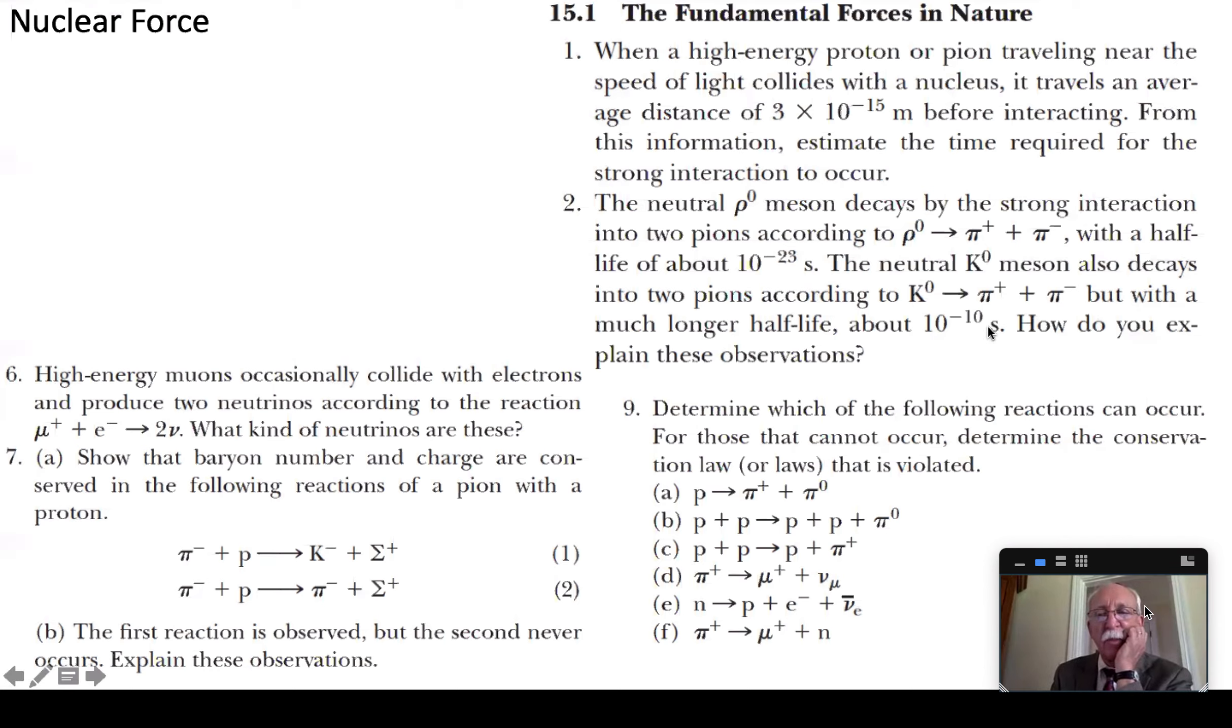So it ends up that the weak force has half-lives typically on this level. So the force that causes these two pions to be released from the decay of the k meson is completely different than from the rho-meson. This is a strong interaction. This is the weak interaction.